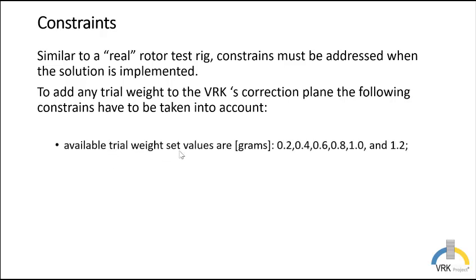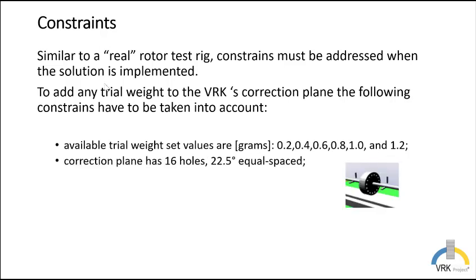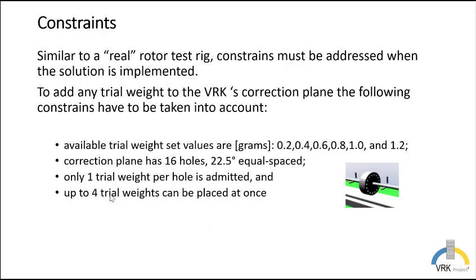Available trail weight sets values are 0.2, 0.4, 0.6 and so on grams. The correction plane has 16 holes, as shown here in this figure, and they are equal spaces at 22.5 degrees. Only one trail weight per hole is admitted and up to four trail weights can be placed at once.